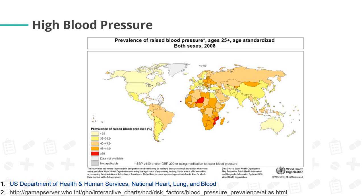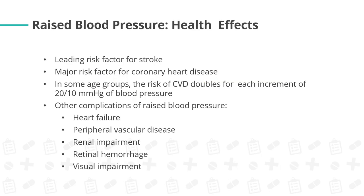This illustration shows the prevalence of raised blood pressure, ages 25 plus, age-standardized, both sexes during 2008. Countries colored in red have high prevalence of raised blood pressure while those in lighter colors have low prevalence. Health effects of raised blood pressure: it is a leading risk factor for stroke and a major risk factor for coronary heart disease. In some age groups, the risk of cardiovascular diseases doubles for each increment of 20 over 10 mmHg of blood pressure. Other complications include heart failure, peripheral vascular disease, renal impairment, retinal hemorrhage, and visual impairment.